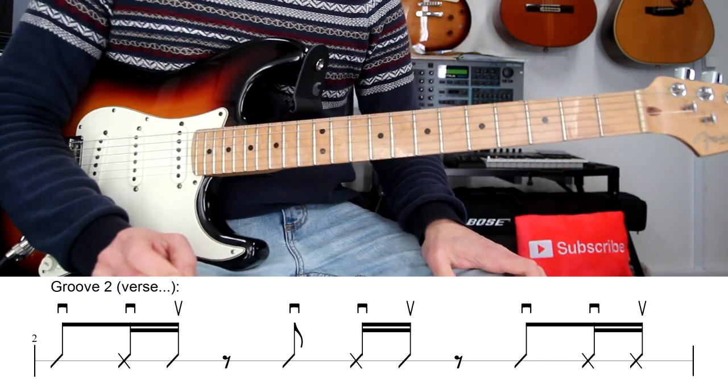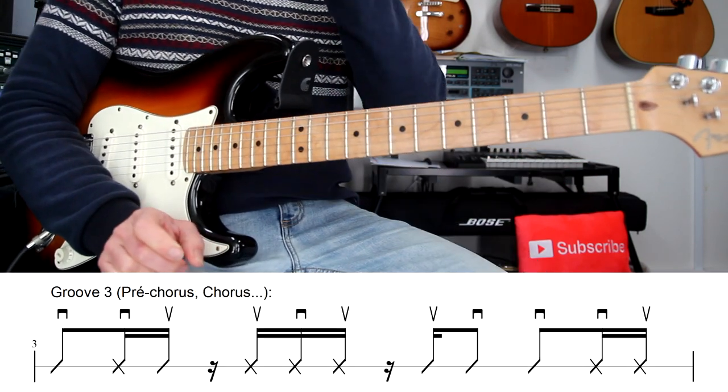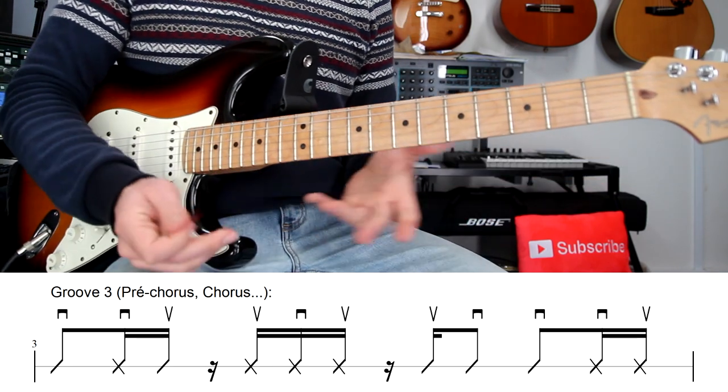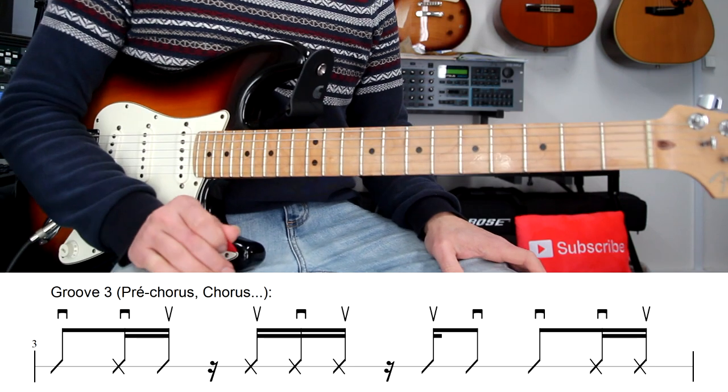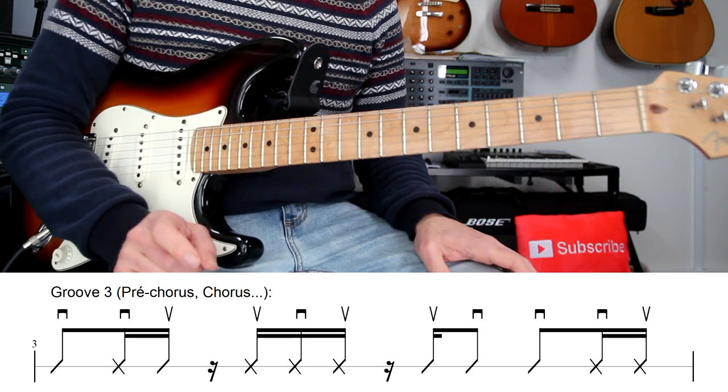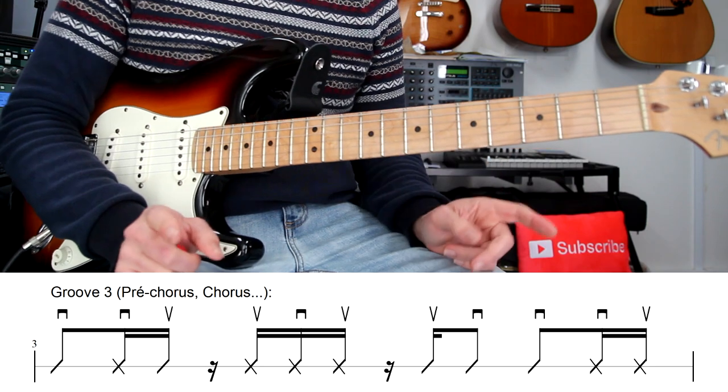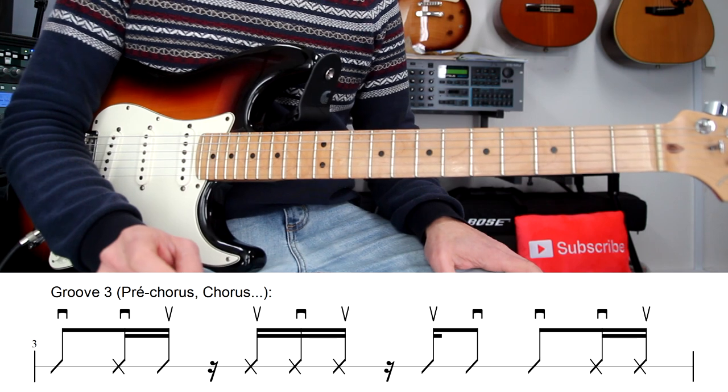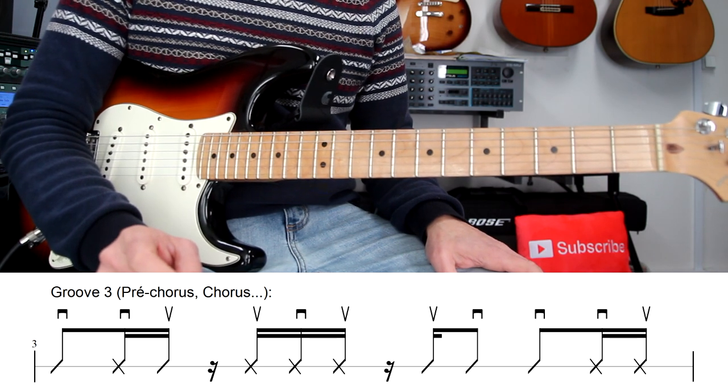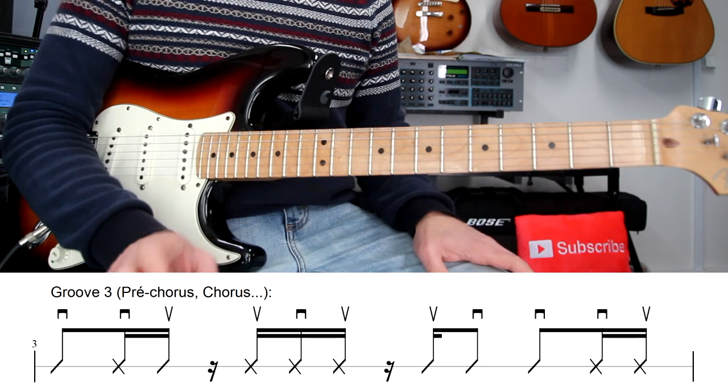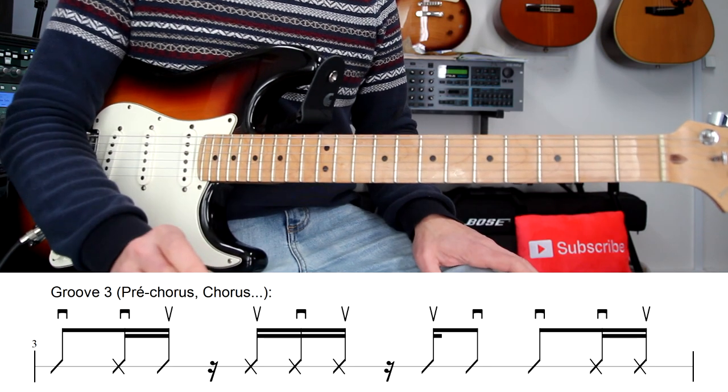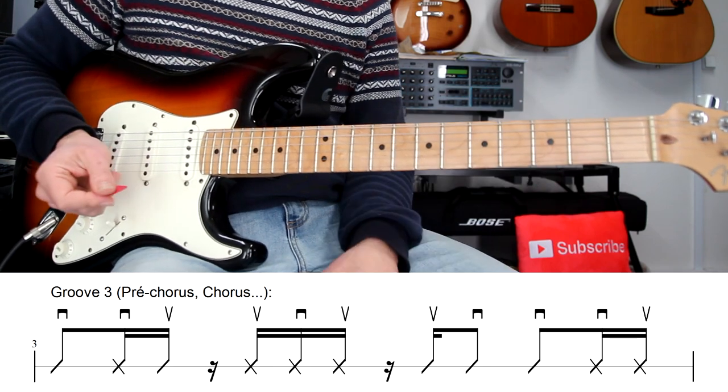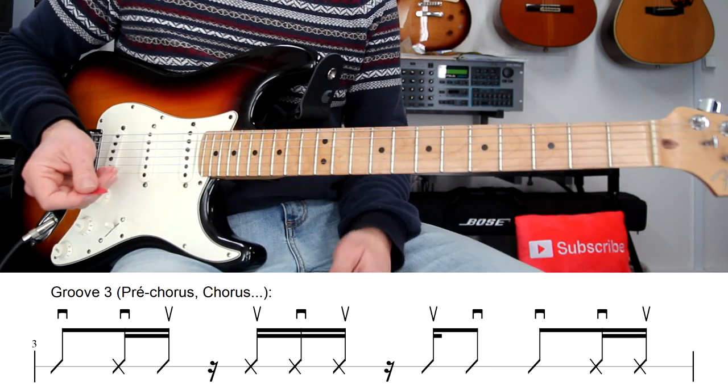Now let's take a look at groove number three, that you can hear in the pre-chorus, the chorus, and you can use on the other parts, which is a more busy rhythm. It has more 16th notes, as you can see. You have to accentuate those notes on the third beat. And the first one on the fourth beat. Those notes on the second beat are just ghost notes. Don't play them very accentuated. So one, two, three, four.